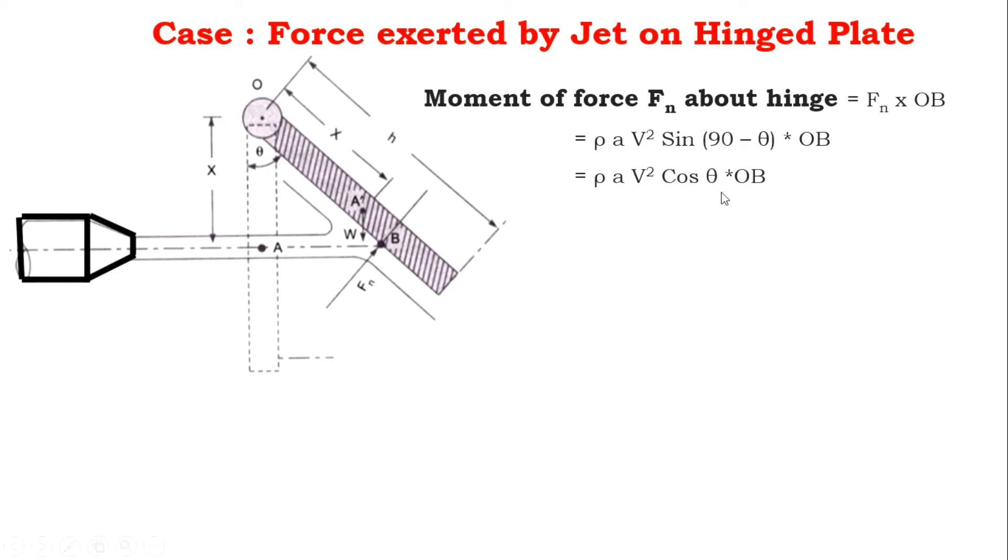Now put the value of OB in terms of OA, that is OB equals OA divided by cos θ. Cos θ gets canceled out. Here we get OA, and as we discussed earlier, OA is equal to X.